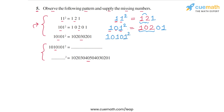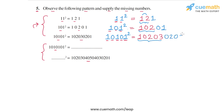Applying the same thinking to 10101²: the first 1 gives us 1, the zero gives us 0, the second 1 gives us 2, the next zero gives 0, and the third 1 gives us 3. Completing symmetrically, we get 10203 followed by 0201 — so 10101² = 102030201.